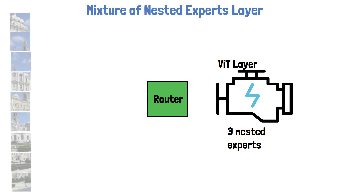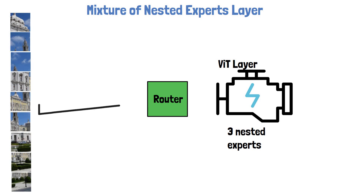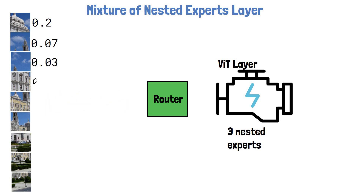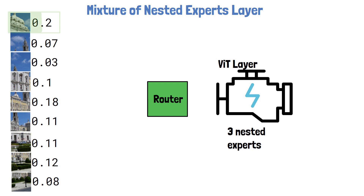As input, we have an image divided into patches, since we use a vision transformer. The input is embedded to tokens before this phase. The input tokens are passed into the router, which assigns to each token a probability to be processed by each of the experts. The first column of values are the probabilities to be processed by the first expert, which is the full layer. We see larger values are assigned to tokens with important information, and smaller values are assigned to tokens with less valuable information.